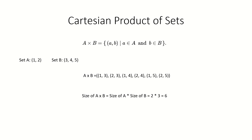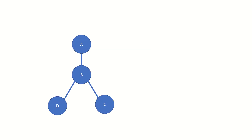So how do we take a Cartesian product of graphs? Well, just like the Cartesian product of two sets is itself a set, the Cartesian product of two graphs G and H is itself a graph.